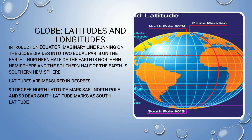Now moving to latitudes and longitudes. We consider Earth as a globe. The Earth consists of horizontal lines and vertical lines. The equator is an imaginary line running on the globe that divides the Earth into two equal parts: the northern hemisphere and the southern hemisphere. Latitudes are measured in degrees; the equator is the zero degree line.